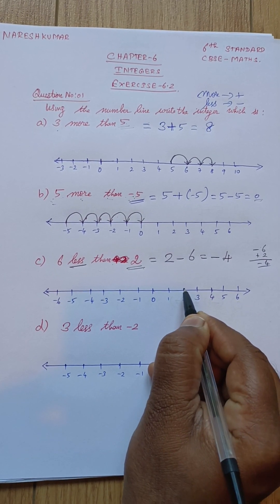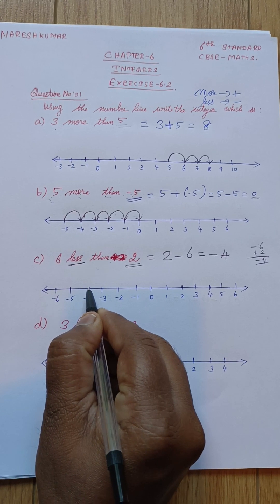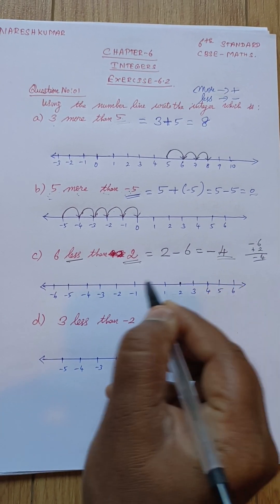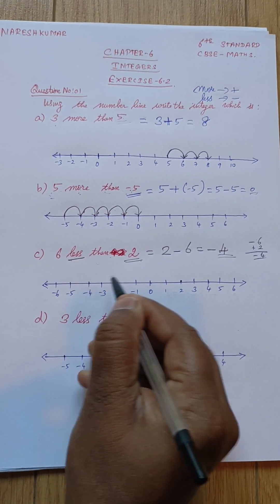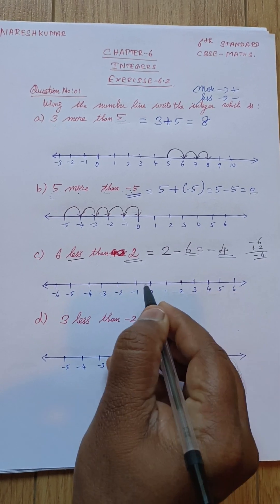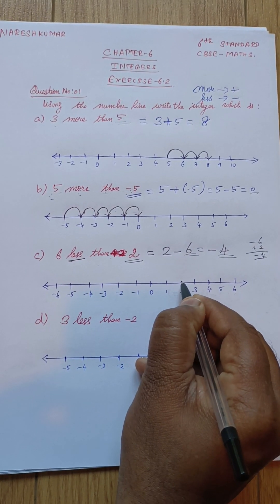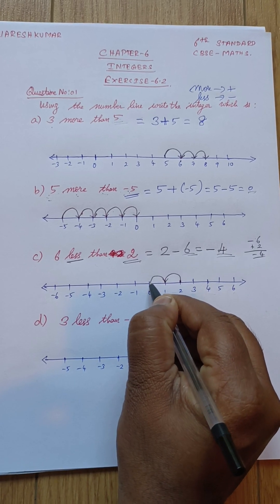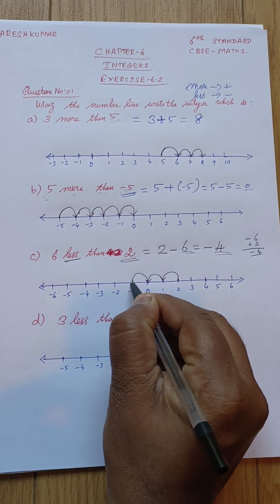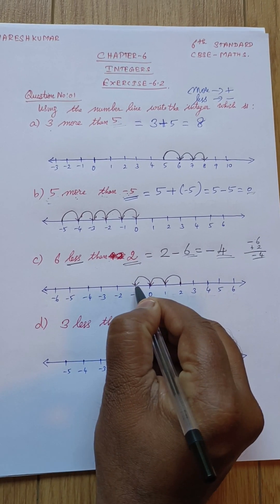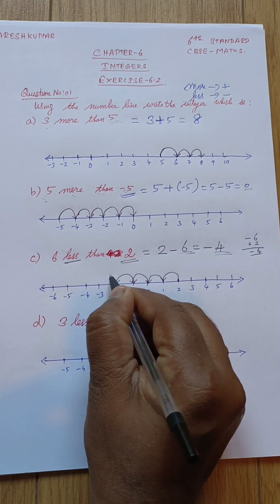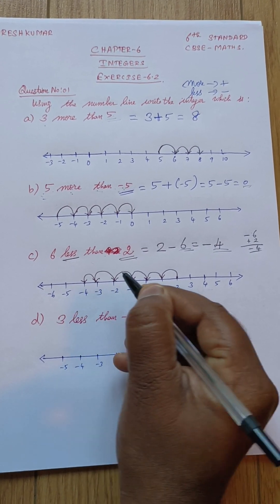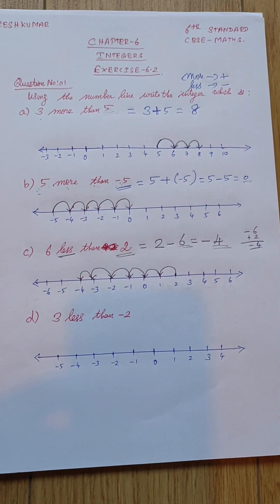According to this, two is the starting point on the number line. Since minus four is the result, we draw from two going left: two, one, one to zero, zero to minus one - six steps total - arriving at minus four.